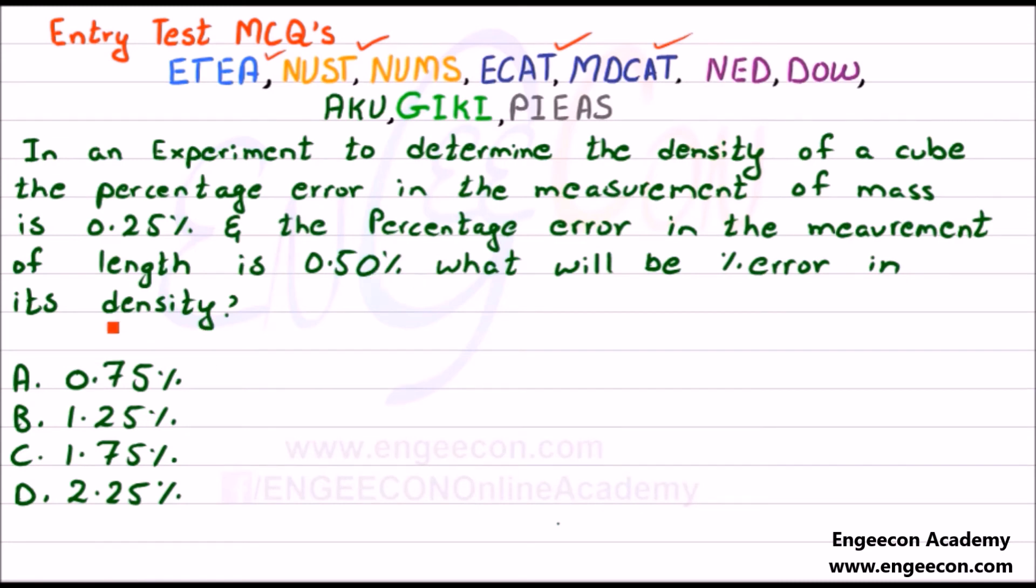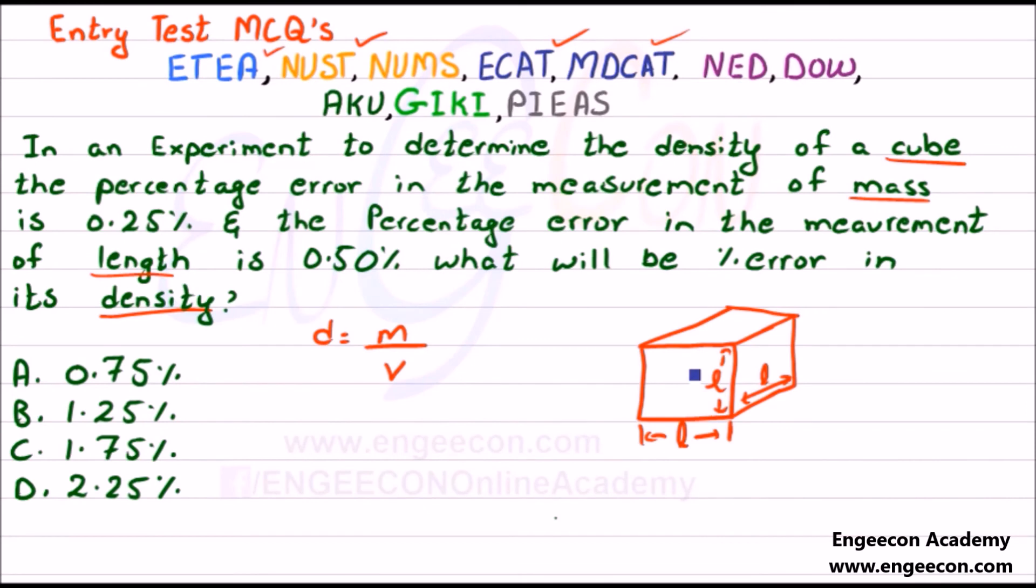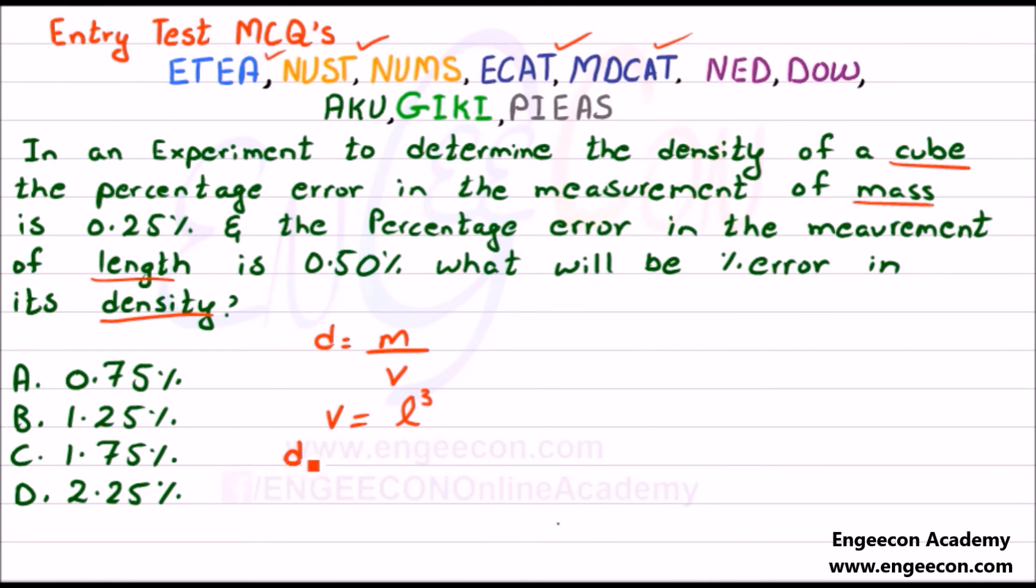First, we write a relationship between density, length, and mass. We know that density equals mass per volume. In the case of a cube, the volume equals L³ or length cubed. So we can write density as mass divided by length raised to power 3.